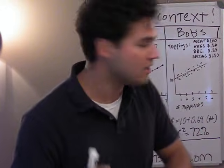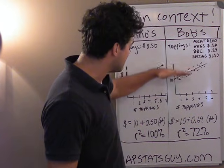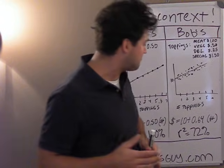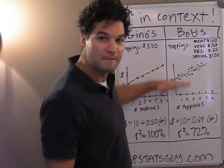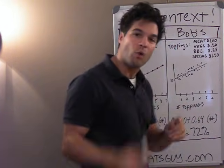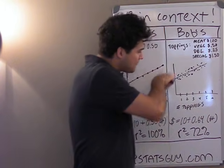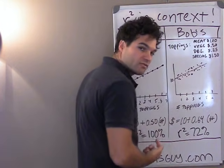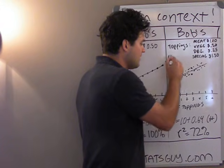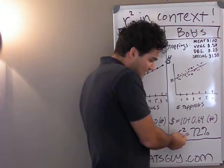But over at Bob's, it's a different story. While the model does explain some of the price differences, at Bob's you can have two pizzas with three toppings but different prices. So the model explains 72% of the price differences, but it doesn't explain all of them. There are other reasons besides number of toppings why two pizzas might cost different amounts. So: 72% of the variability in price can be explained by variability in number of toppings, and 72% of price differences can be explained by the model. That's R-squared.